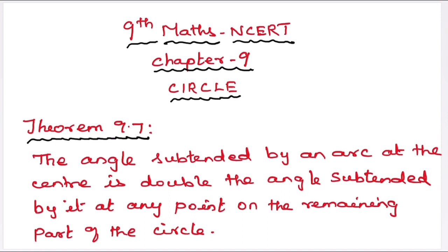The statement is: the angle subtended by an arc at the center is double the angle subtended by it at any point on the remaining part of the circle. This is a very important theorem, and we will use it to solve problems.